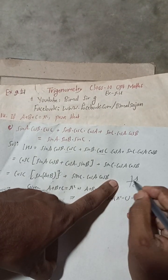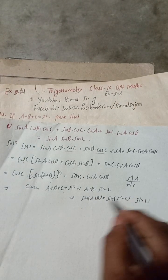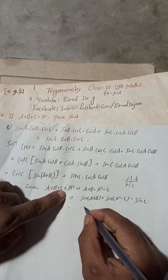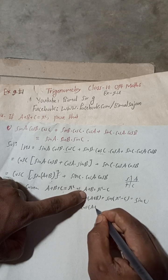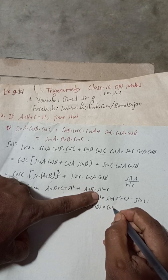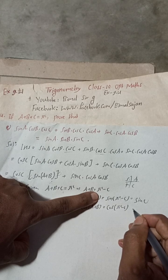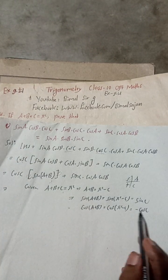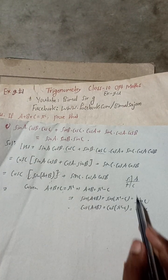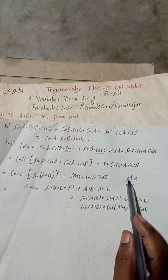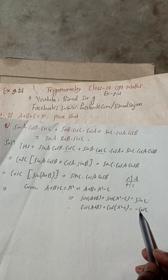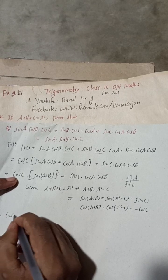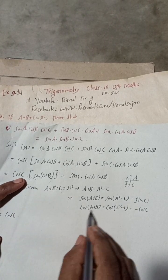This is because, by the CAST rule, pi minus C is in the second quadrant where sine is positive, so sine(pi minus C) equals sine C. In the same way, taking cosine on both sides: cos(A+B) equals cos(pi minus C). This value will be minus cos C, because in the second quadrant only sine and cosec are positive — cosine is negative.